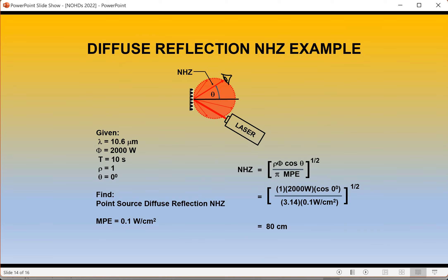For the diffuse reflection equation, we use rho (spectral reflectivity) and theta (viewing angle). We set rho to 1 so that 100% of power is assumed to be scattered off the surface — worst case. Theta is the viewing angle from the observer's perspective, not the laser incidence angle. We set theta to 0 for worst-case calculation. Now let's start doing some work in the software.